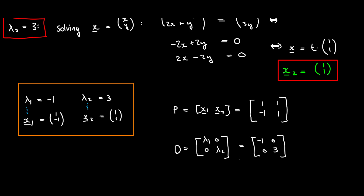This is the diagonalization of our matrix. The matrix P has an inverse because its column vectors are linearly independent. This means P⁻¹AP = D, which is the same as saying A*P = P*D. I'll leave that for you to calculate and verify.